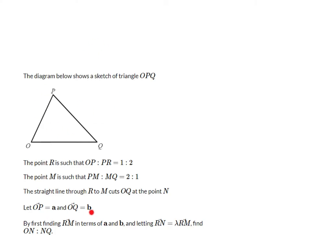We're given a couple of vectors, and then we are asked to, or given instructions really, to finding one vector first, and then letting another vector equal this other vector multiplied by a constant, which is called lambda. We want to find a ratio. There's quite a lot of stuff going on to unpack.